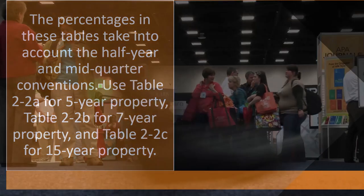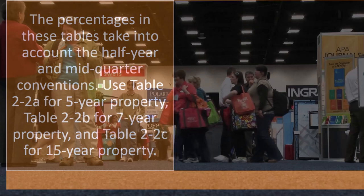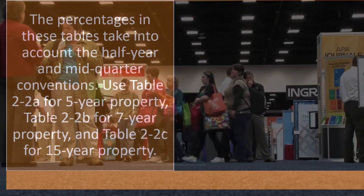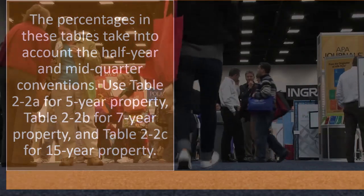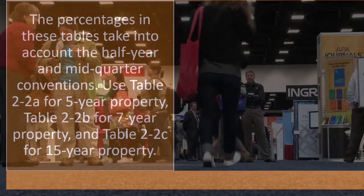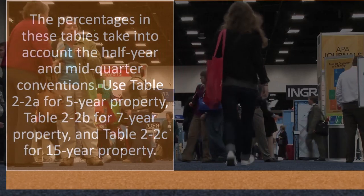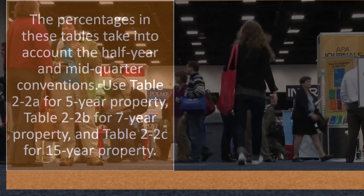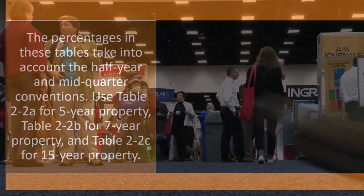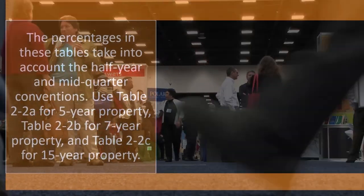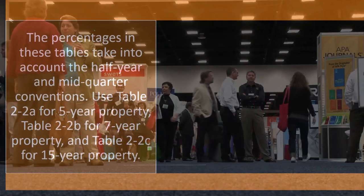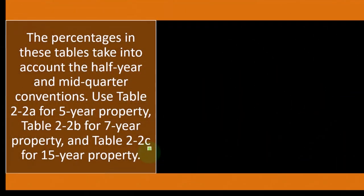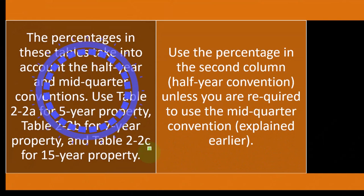You have to use a different table depending on whether you're going to take into account the half-year, mid-quarter, or mid-month convention. Use table 2-2A for five-year property, table 2-2B for seven-year property, and table 2-2C for 15-year property.